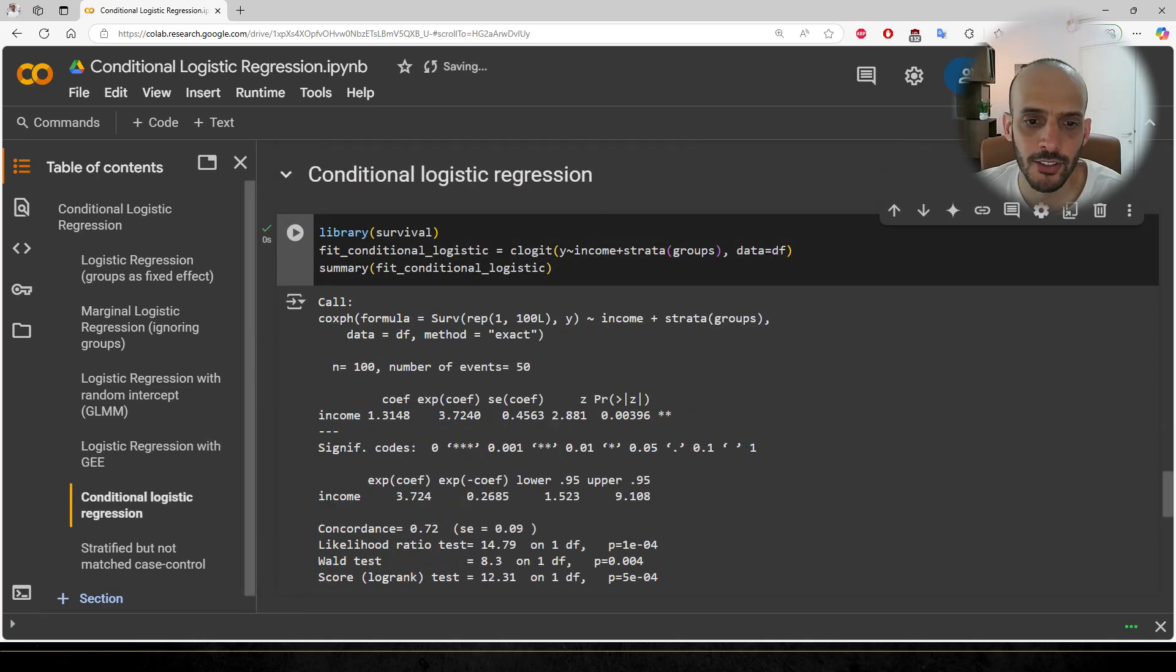Finally, we fit the conditional logistic regression. This time, we obtain an estimate very close to the true beta of 1, and it comes out highly significant. So, hooray!